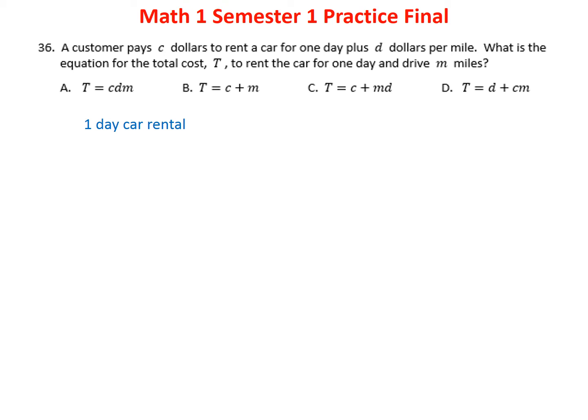Problem thirty-six: a customer pays C dollars for one day plus D dollars per mile. The mileage fee is D times the number of miles. Adding the one-day rental and the mileage fee gives the total cost equation: total equals C plus D times miles. The answer is C.